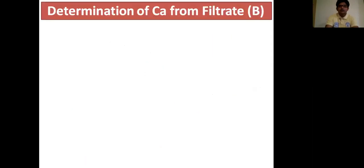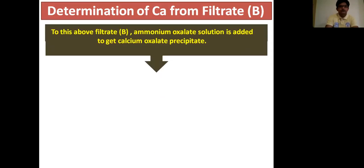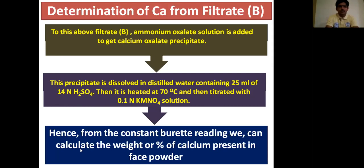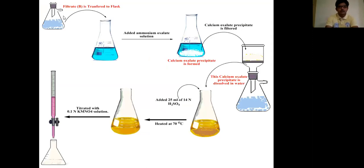For determination of calcium from filtrate B, ammonium oxalate solution is added to filtrate B to obtain a calcium oxalate precipitate. This precipitate is dissolved in distilled water containing 25 ml of 14 N H₂SO₄, heated at 70°C, and then titrated with 0.1 N KMnO₄ solution. From the burette reading, the weight or percentage of calcium present in the face powder can be calculated.